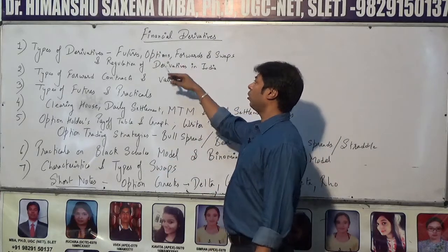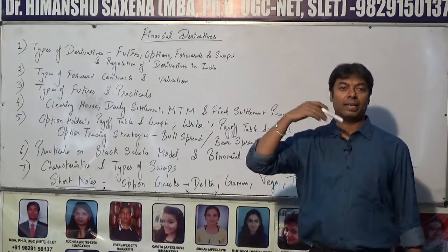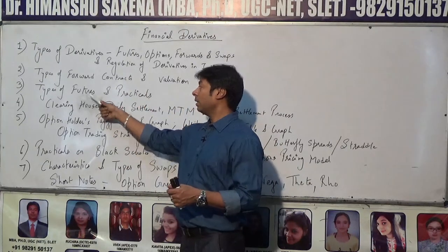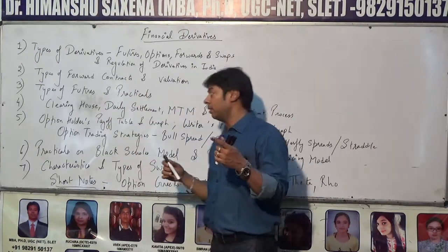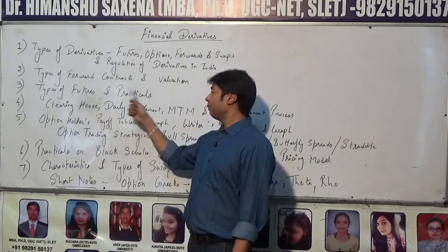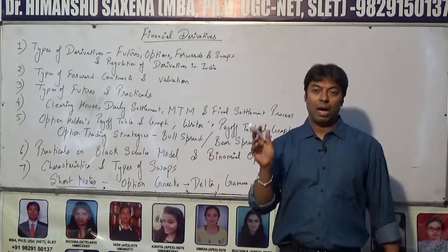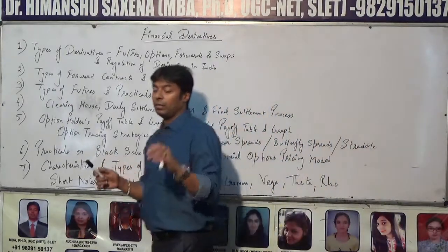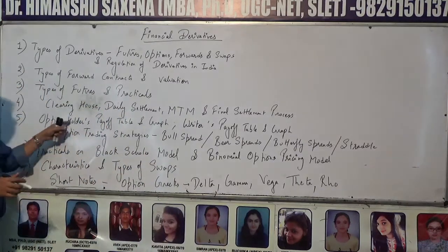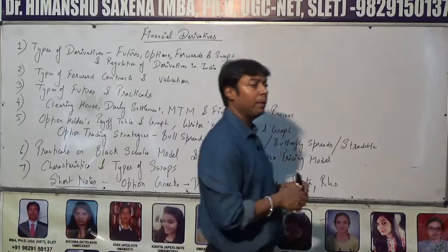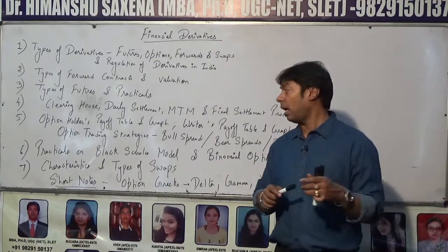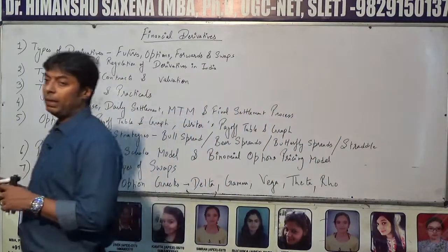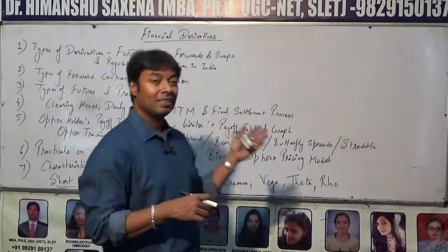To summarize: the types of derivatives are futures, options, forwards, and swaps, along with their regulation. Types of forward contracts and their valuation. Types of futures and their practicals. Clearing house functioning: daily settlement, mark-to-market margins, and final settlement. Option holders' payoff table and graph, writers' payoff table and graph. Option trading strategies based on bull spread, bear spread, butterfly spread, and straddles.